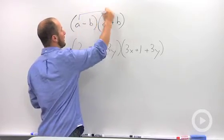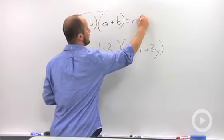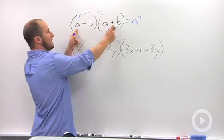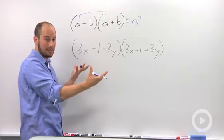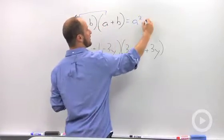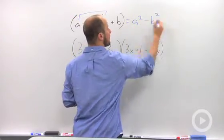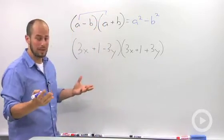we end up with the a times the a, which is a squared. Distributing this a to the b and the a to the negative b, those two are equal and opposite, so those cancel out to nothing, and we have the b times the negative b, ending up with negative b squared. So, just standard FOIL operations.